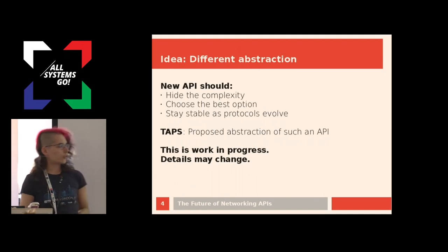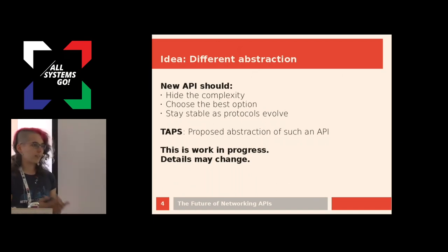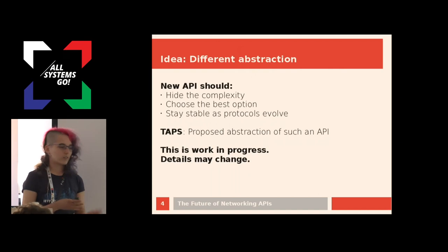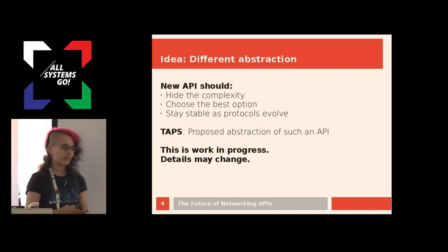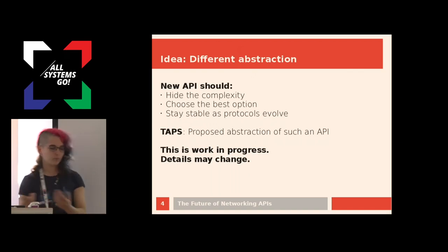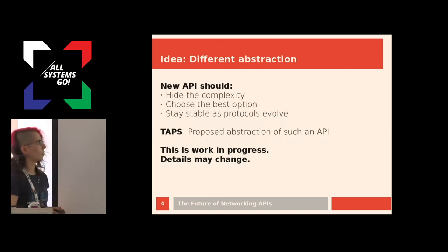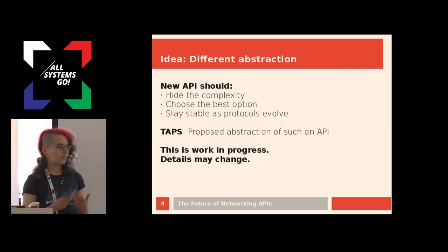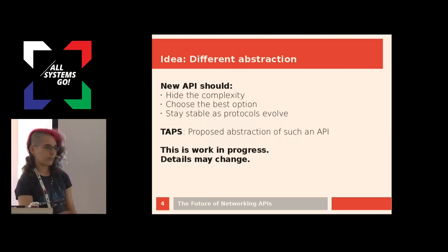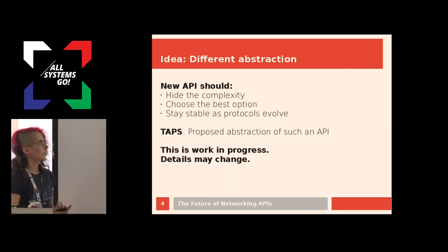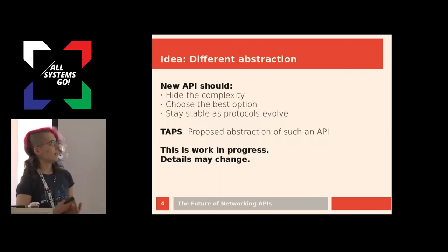That is what we are trying to do with this new abstraction for an API. The new API should hide the complexity of the network, so the application doesn't have to discover the different paths, discover the different endpoints, discover the different transport protocols, set up this socket, then try this other socket if the first one didn't work. It should just say 'I want a connection', and then it should get its connection, and whatever happens underneath should not be the problem of the application.